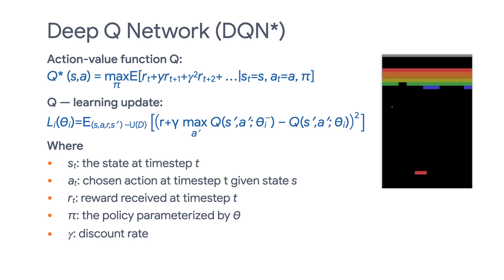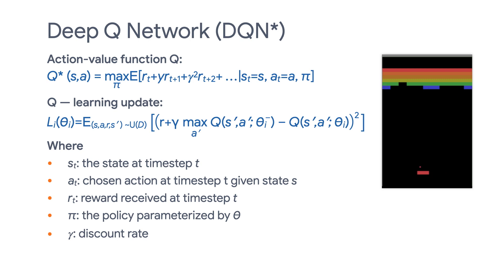if you know the reward values for all possible actions given a state, it's pretty easy to pick the best action for that state. Now our job is to represent the Q function with a neural network, which leads to the second equation.